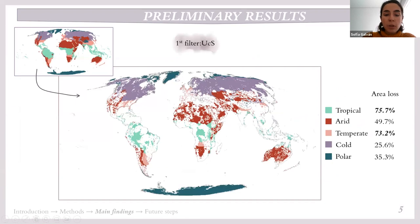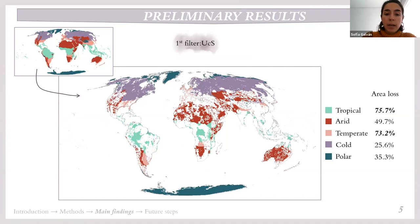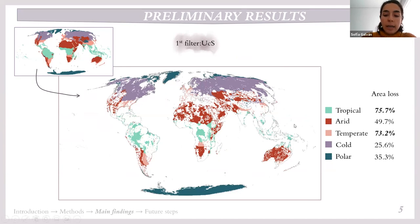As preliminary results, focusing just on the first filter — the geological unconsolidated sediment filter — and retaining only the information that falls inside sedimentary environments, we can see that tropical and temperate climatic zones are the most affected, losing around 75% and 73% of their area respectively. In contrast, the cold climatic zone is the least affected. As the tropical climatic zone is the most affected and has the highest number of species, we wondered whether more species signal would be lost there.